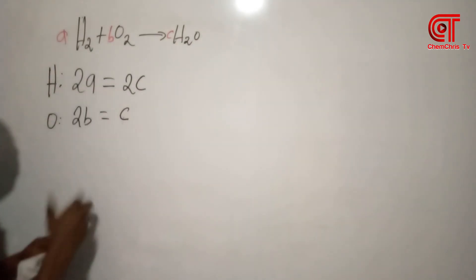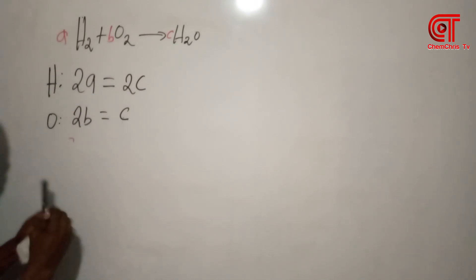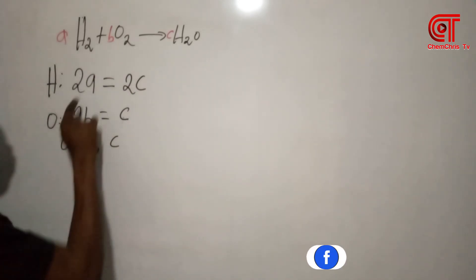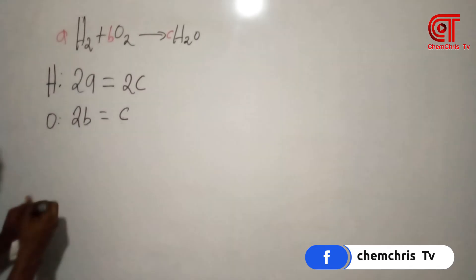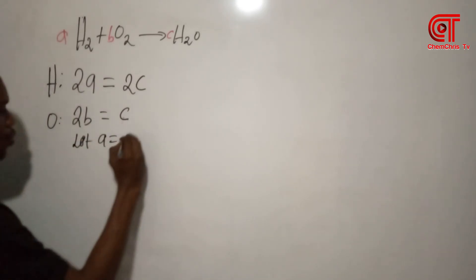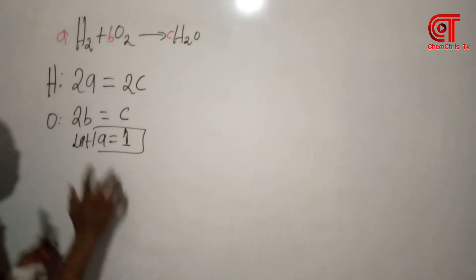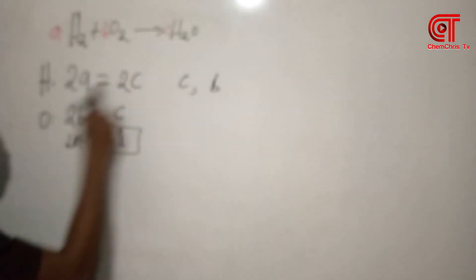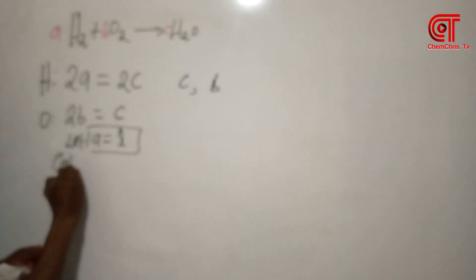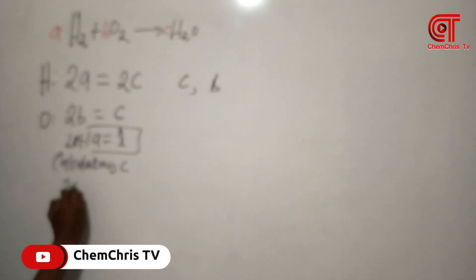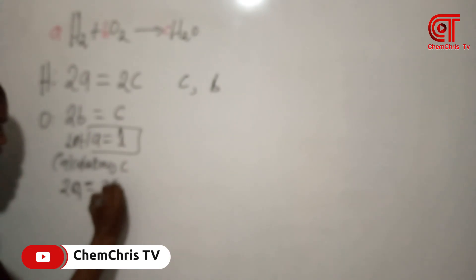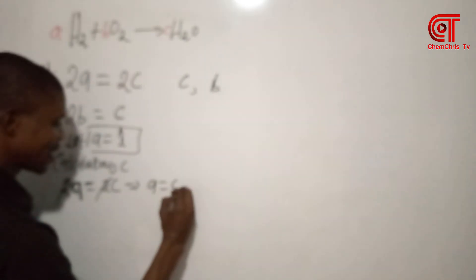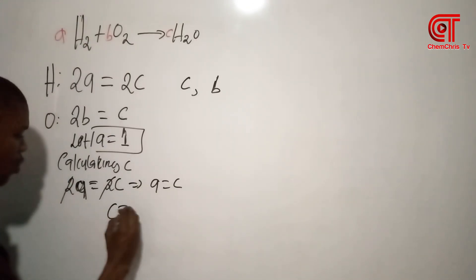Next we want to calculate each of the unknowns: A, B, and C. The first thing to do is equate the first unknown to 1, so let A equal 1. If A equals 1, I can solve for C and B. From 2A equals 2C, we get A equals C, and since A is 1, C equals 1.